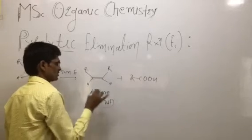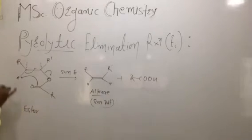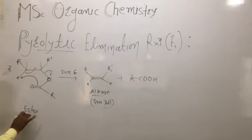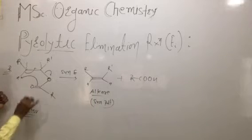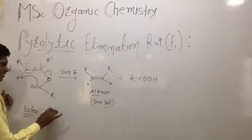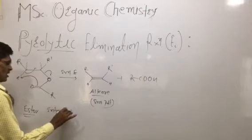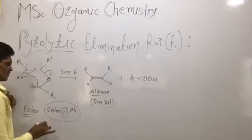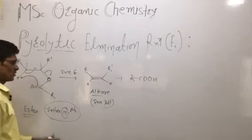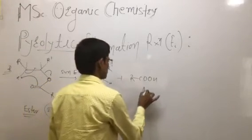This is called syn elimination. The starting reactive molecule undergoes intramolecular proton transfer — that is, intramolecular proton abstraction — with formation of unsaturated hydrocarbons, that is alkene. The acid is formed as a side product.